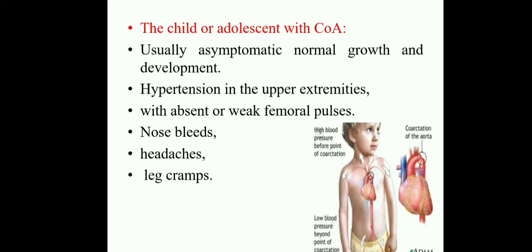Some additional clinical features: absent or weak femoral pulse — when we palpate the femoral pulse, sometimes we cannot feel it. The child is also suffering from nosebleeds, because high blood pressure is in the upper extremities. When the ventricle contracts, blood moves to the upper extremities only because of the narrowing, so due to the high pressure, the child suffers with nasal bleeding. Headache and leg cramps are also present. Why leg cramps? Because oxygenated blood is not supplied to the lower extremities. These are the main clinical features in coarctation of aorta.